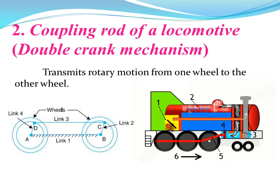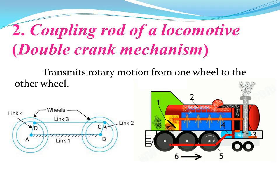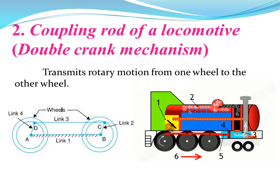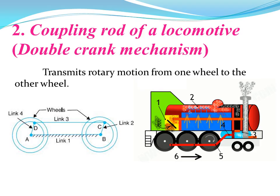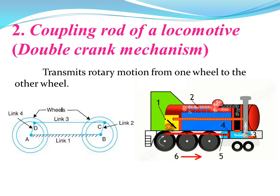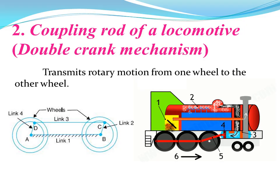Next, the train has one wheel, and we need to transmit motion to the other wheel. We use the coupling rod of a locomotive. Here, the fixed link is the link AB, and there is link 4 and link 2. We attach two wheels, and when one wheel rotates, link 3 transmits the motion to the other wheel, transferring the rotary motion. In this way, the power is transmitted through the coupling rod so the train runs.